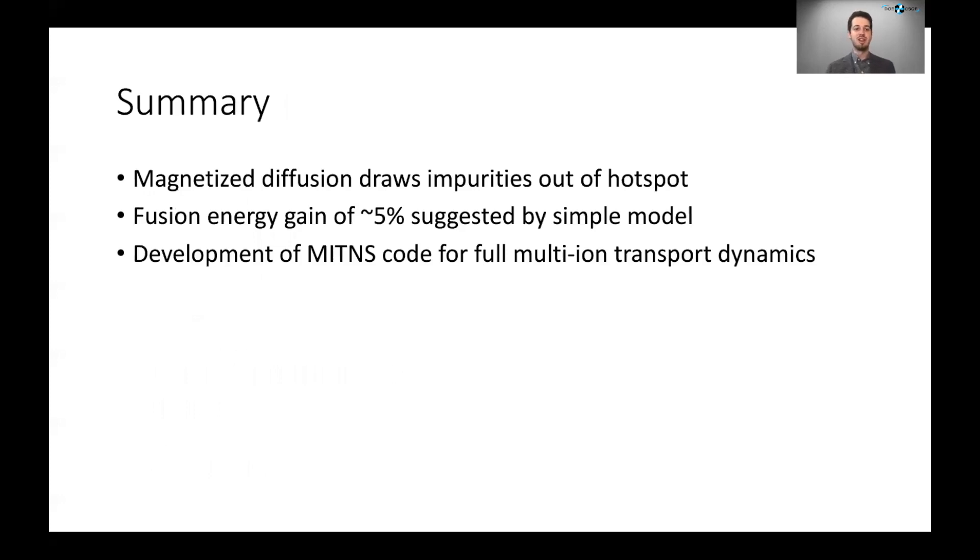So in summary, we found that magnetized diffusion can draw impurities out of the hot spot, as opposed to unmagnetized diffusion, which pushed them into the hot spot. And that this beneficial effect gave you a fusion energy gain of about 5%, as suggested by the very simple model we implemented. And so now we've developed the MITTENS code to explore the full multi-ion transport dynamics. And we're excited to see the directions that takes us.